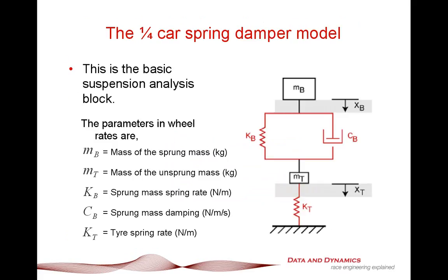Now let's put this into practice by analysing our humble quarter-car spring-damper model. This quarter-car spring-damper model is the bedrock of a lot of analysis, and as I said, it is amazing how far you can push this old warhorse. Basically, what we've got is our sprung mass mb, our wheel spring rate kb, our damping rate cb, our unsprung tyre mass mt, and our tyre spring rate kt. If we wanted to be thorough, we could add a tyre damping rate, but in reality tyre damping rates are very, very small, so this is a pretty good approximation.